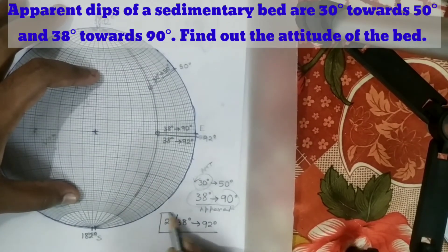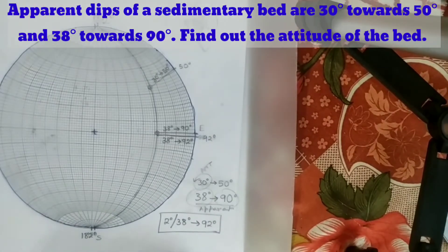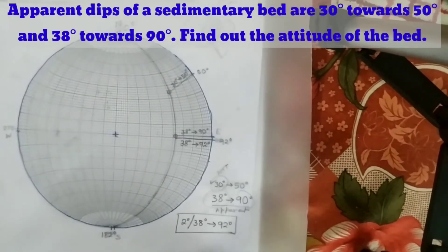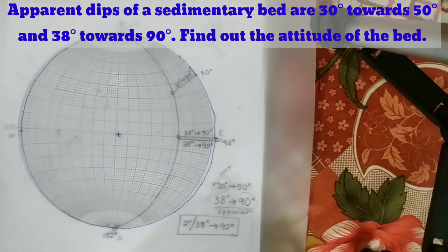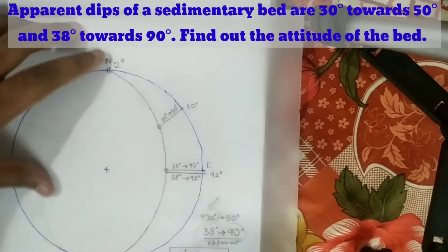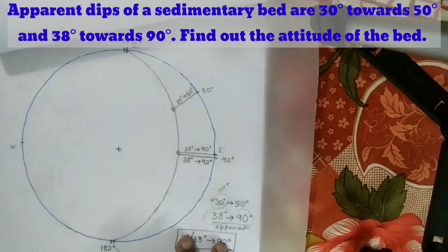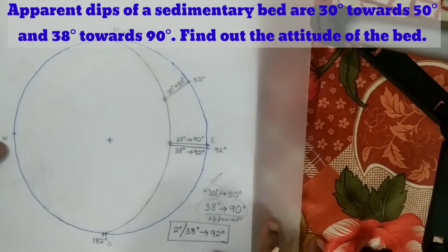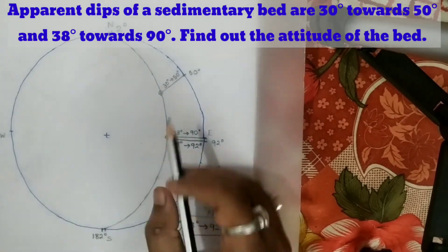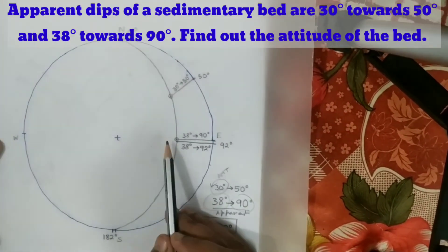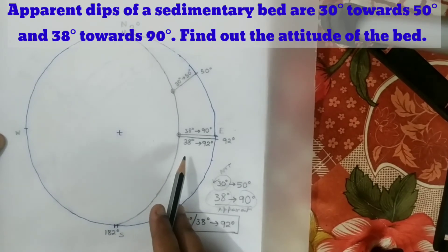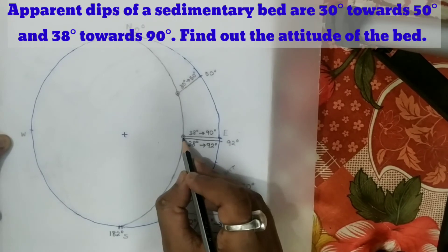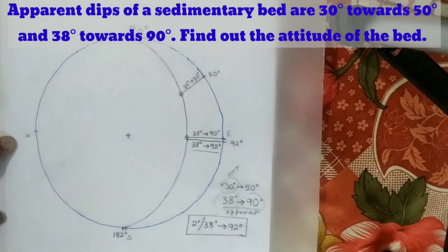So this is the answer. This is the way we have to solve this problem. Your stereonet will be looking like this. This is one apparent dip, and this is another apparent dip which was given very close to the true dip. And this is the true dip amount.